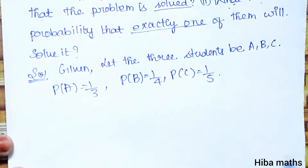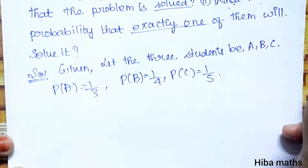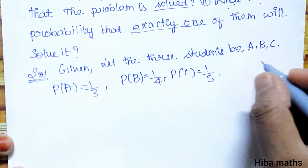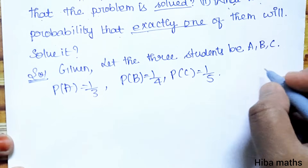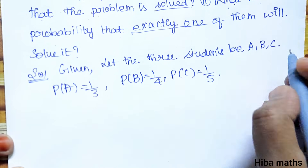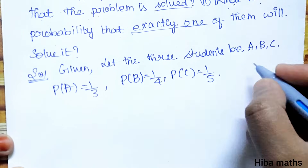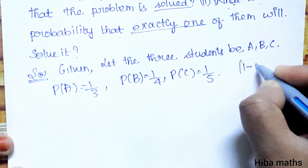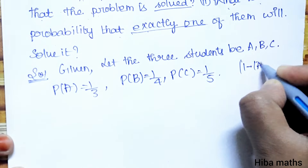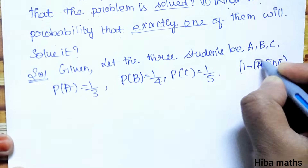What is the condition? At least one — at least one condition is solved. It's very simple. We use one term: 1 minus P(A') intersection P(B') intersection P(C'). What is the possible probability? It's 1 minus the complement.